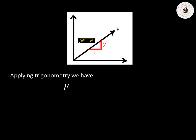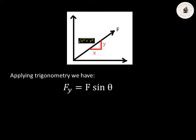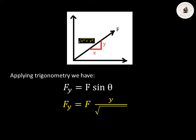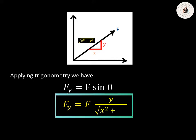To solve for Fy, we still apply trigonometry. Recalling the formula for Fy which is F multiplied by sine theta, to get the value of sine theta we substitute the given x and y. Recalling in trigonometry, sine theta equals opposite over hypotenuse. Looking at the given triangle, the opposite side is y and the hypotenuse is the square root of x squared plus y squared. That's why Fy equals F multiplied by y over the square root of x squared plus y squared.